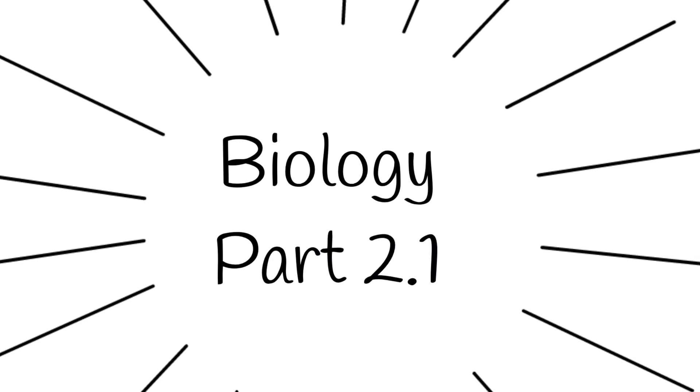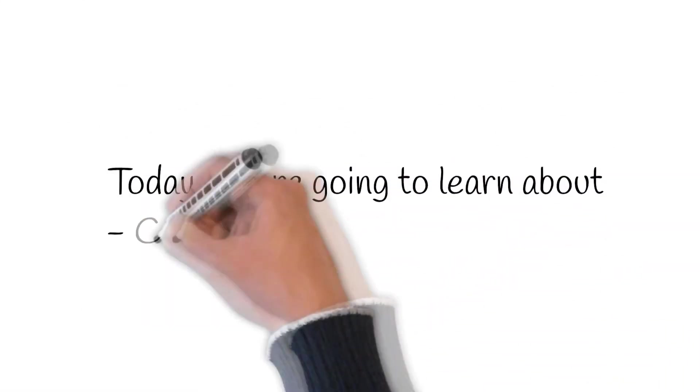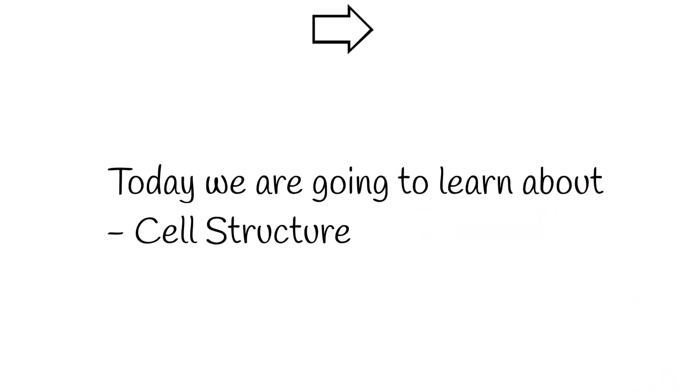Welcome to this video in our series on IGCSE Coordinated Sciences. This is Biology 2.1. In today's lesson, we will be learning about cell structure. If you haven't seen our previous videos, click on the card above.